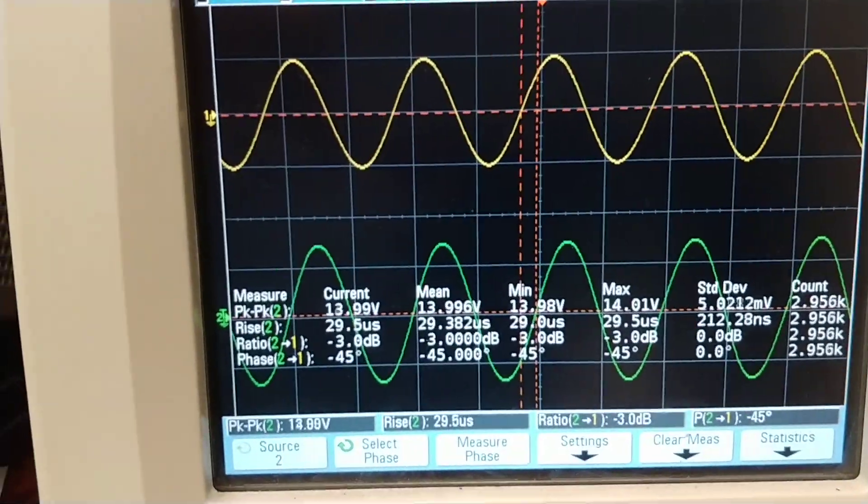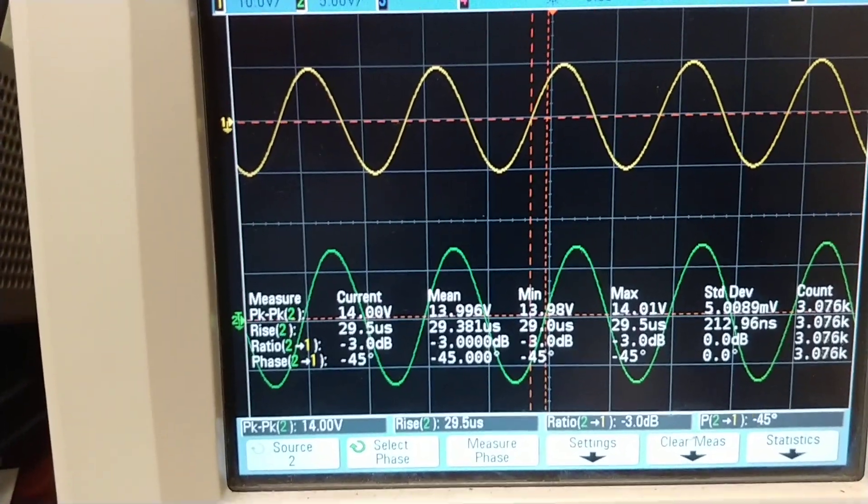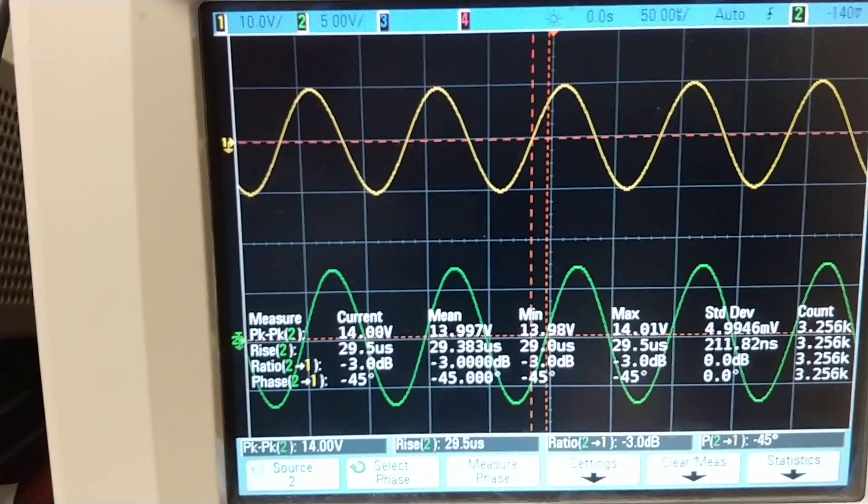But the phase and the magnitude, the phase being like minus 43 at a gain of 3dB, that's acceptable.